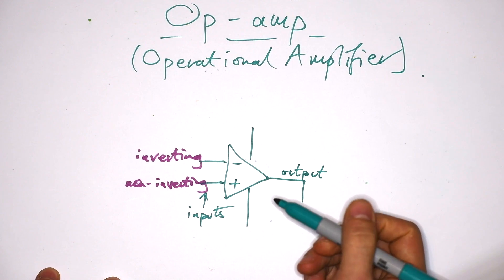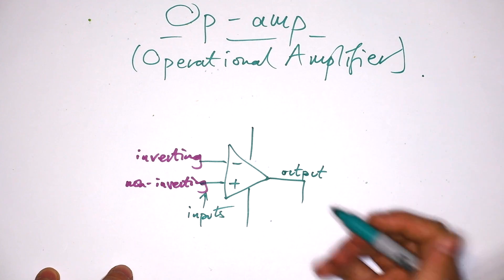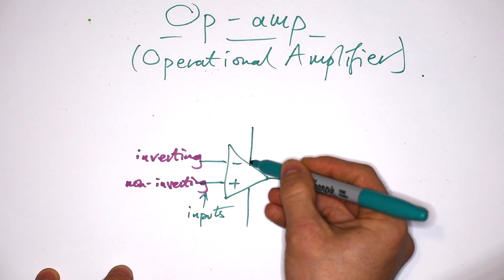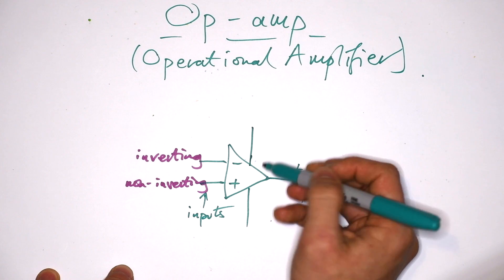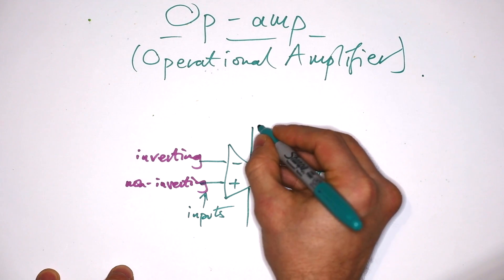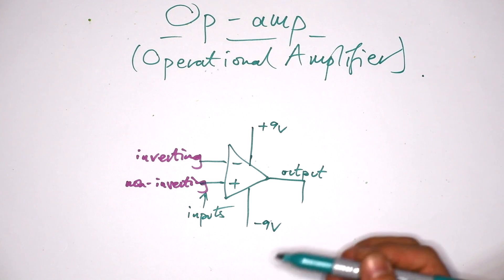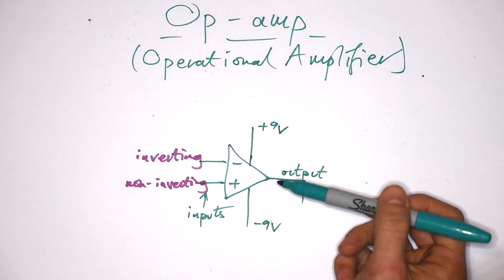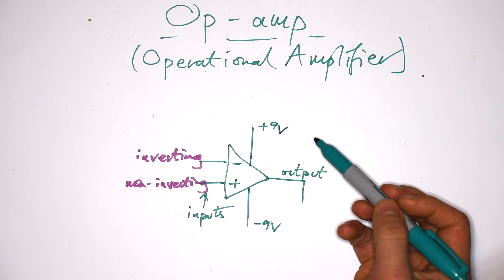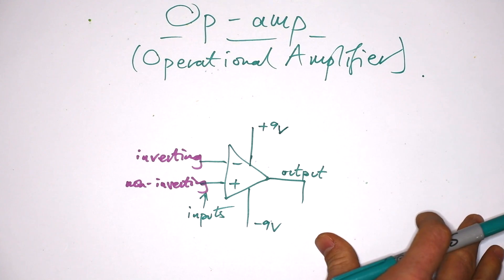And in order to take an input and amplify it, we do need a power supply, and that's what these two lines coming out of the side are. Sometimes you might see them connected to a circuit, but more often than not, you'll just see them coming out like this, and you might see something like plus 9 volts and minus 9 volts. In other words, it's connected to something that can provide a potential of plus 9 volts or minus 9 volts or anything in between. So the maximum positive voltage you can have out of this op amp is 9 volts, and maximum negative voltage is minus 9 volts.